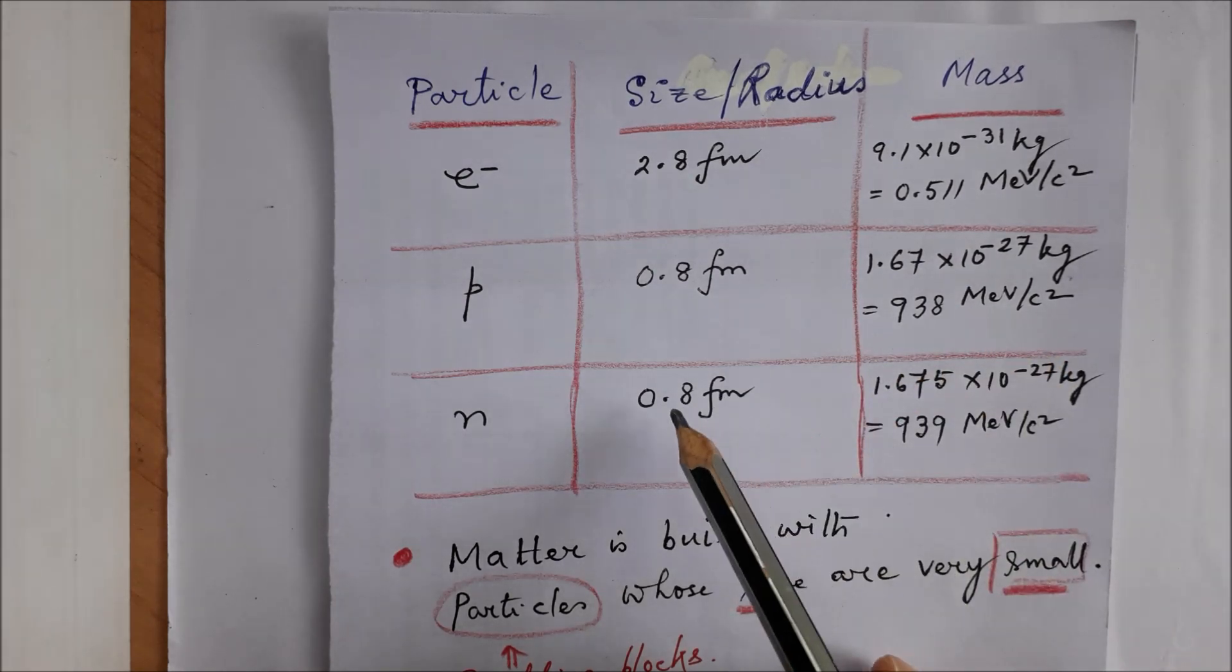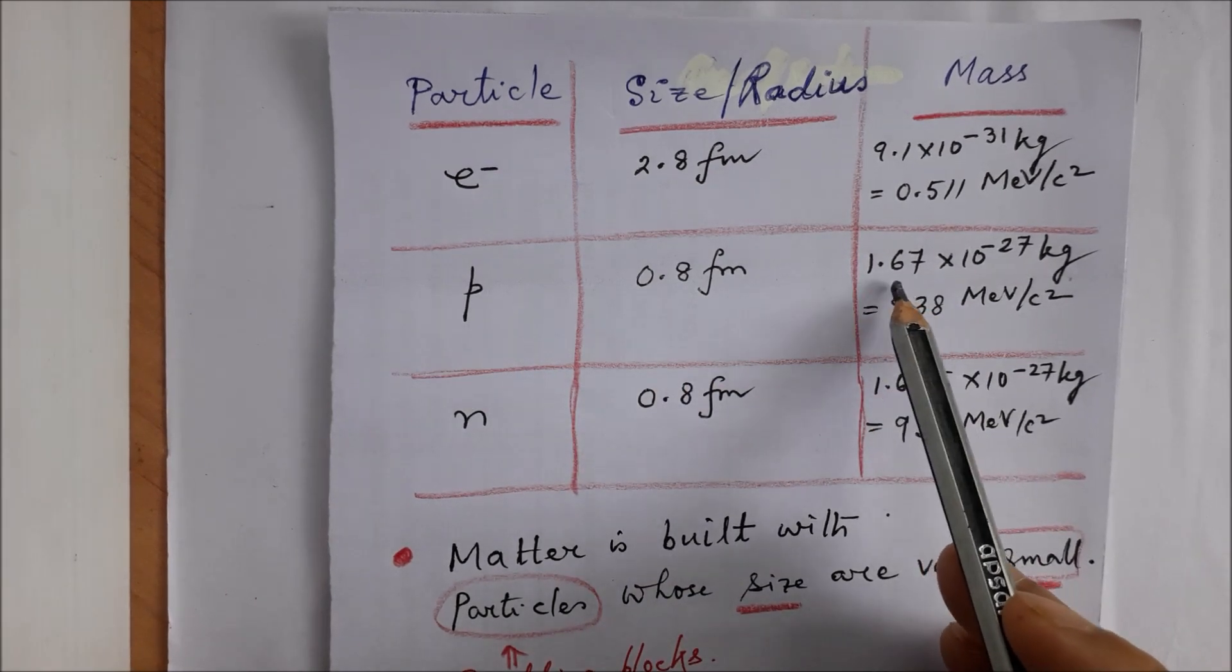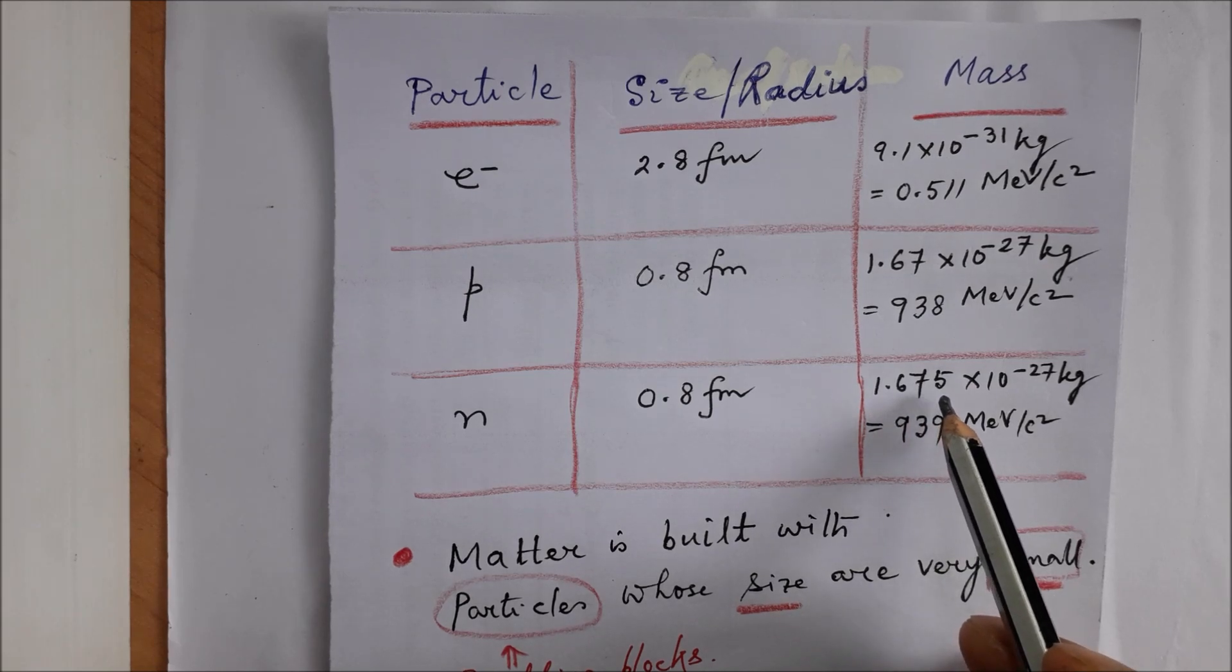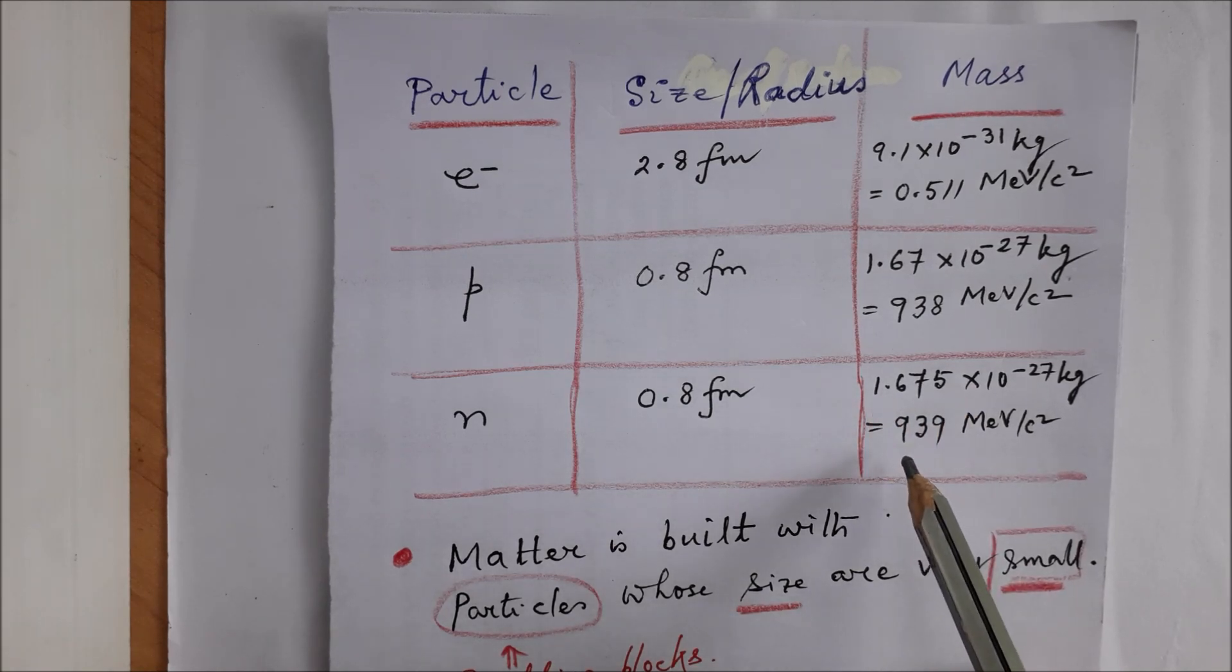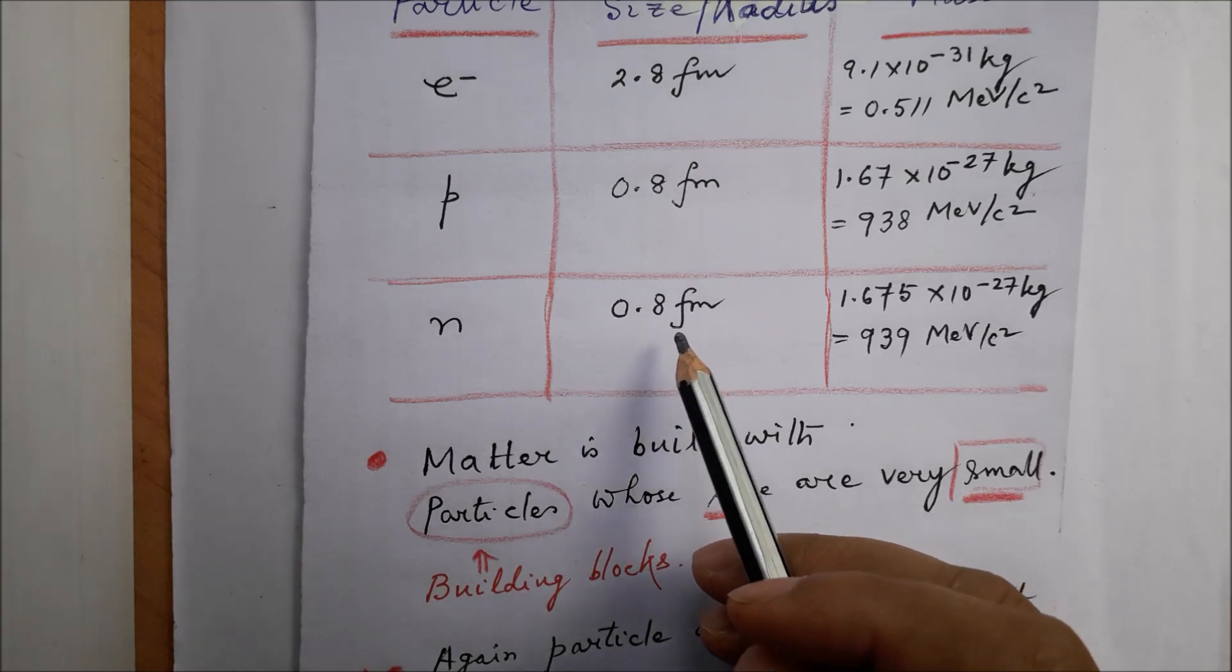Neutron is a bit heavier than proton, slightly heavier than proton. Here we have 1.67 and here we have 1.675. And neutron has a mass of 939 MeV/c² here.